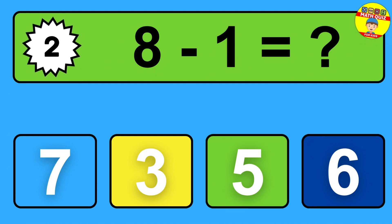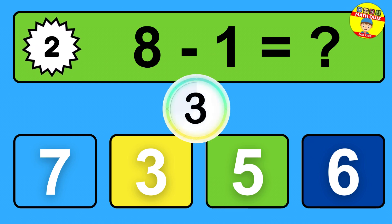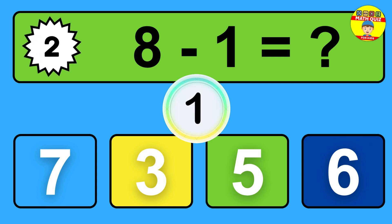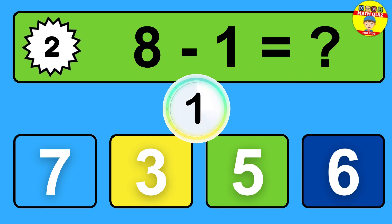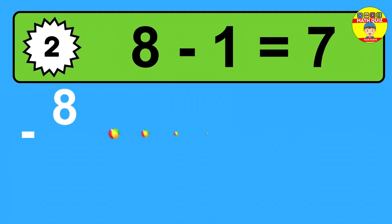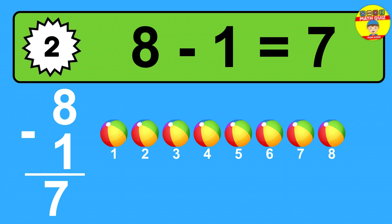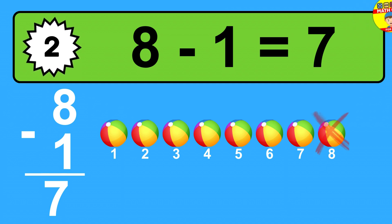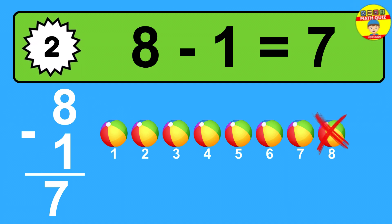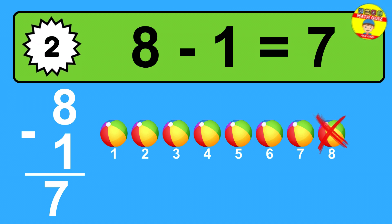Question two: eight minus one equals what? The answer is eight minus one is seven. Let's count it: one, two, three, four, five, six, seven.